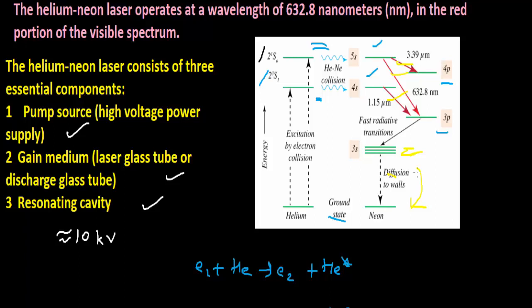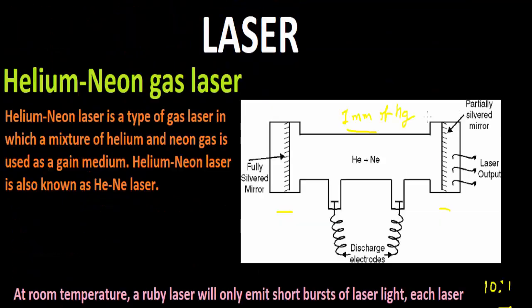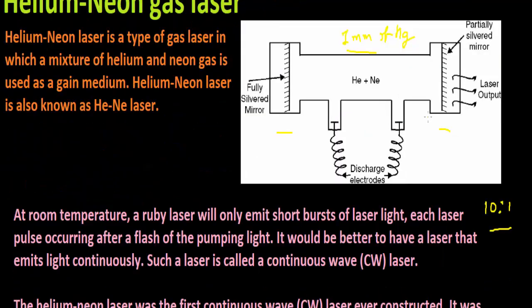Since the discharge tube is maintained continuously, the cycle of events also takes place continuously. This helium-neon laser is a continuous laser, and this is how the total operation of helium-neon gas laser takes place.